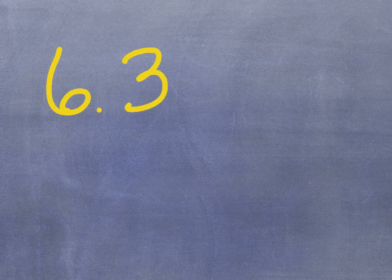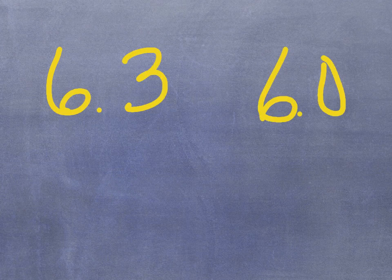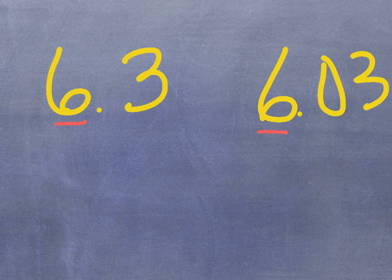Let's say I have the number 6 and 3 tenths, and I want to compare it to 6 and 3 hundredths. Students must look at place value to place value. Let's look at the 6 and the 6 — they're the same, so I have to go to the next place value: the 3 and the 0. By going to that place value, they know that 6 and 3 tenths is greater than 6 and 3 hundredths.